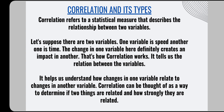Let's suppose we have two variables: one is speed and the other is time. The change in one variable definitely creates an impact on the other. For example, suppose you have a bike or a car and you need to move from destination A to destination B. If you increase your speed, you will reach in less time. So the change in one variable creates an impact on another — if you increase your speed, it will take lesser time.